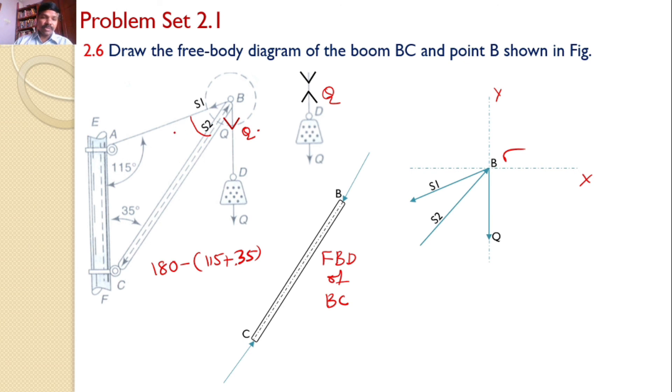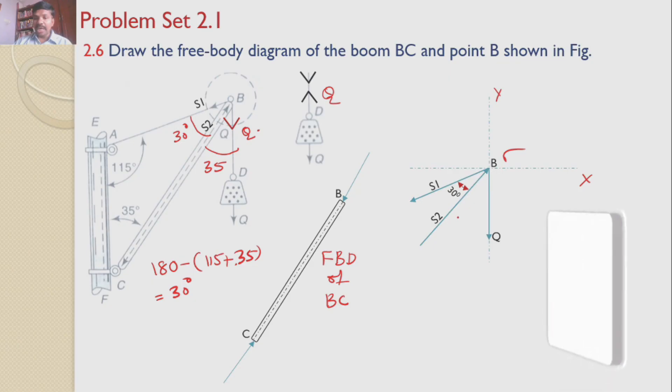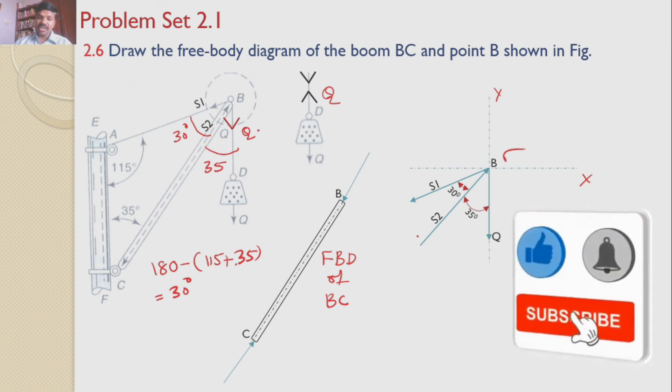Okay, so this becomes 30 degrees. That means this angle is 30 degrees. The angle made by BC with the vertical is given as 35. Similarly, the angle made by the BC with the same vertical must also be equal to 35 because the opposite angles must be same. That means the angle between S2 and Q is equal to 35 degrees.